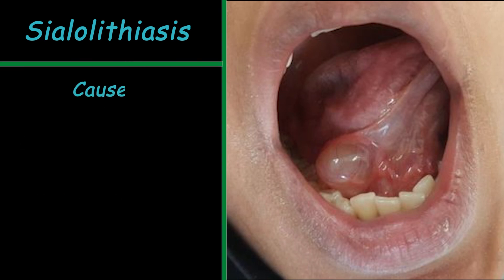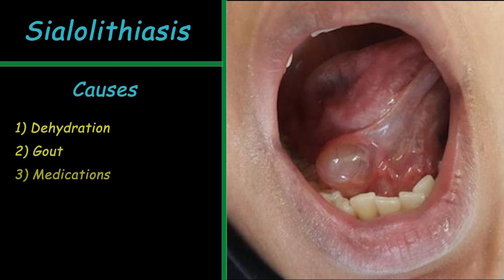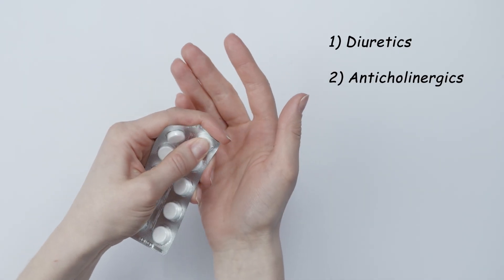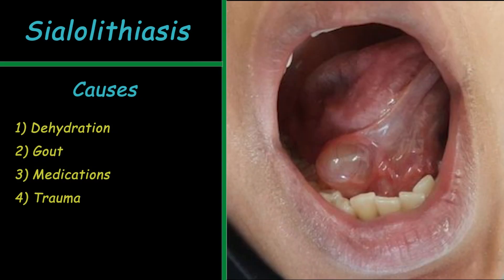The real cause of this condition is not completely known yet, but some risk factors may play a role, including dehydration, gout, a number of medications such as diuretics and anticholinergic drugs, trauma, smoking, and history of kidney stones. These factors reduce or block saliva flow through the glands or ducts, and it gradually forms a stone or several stones in those places.